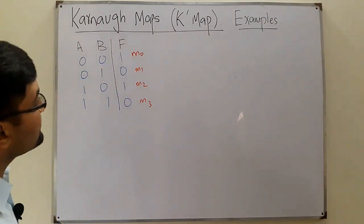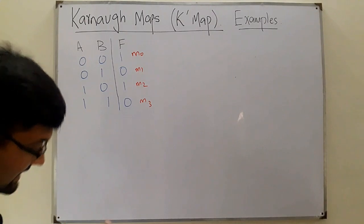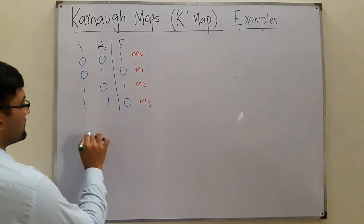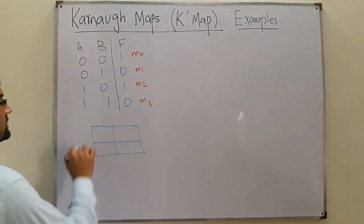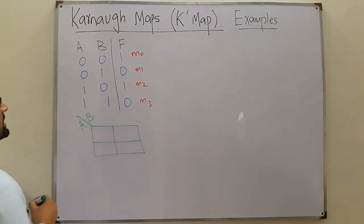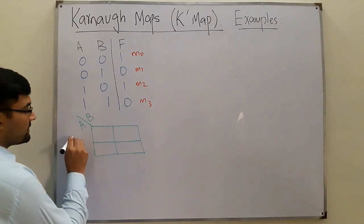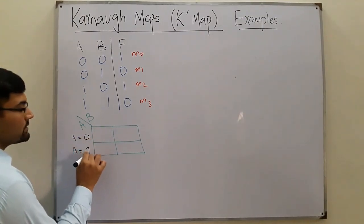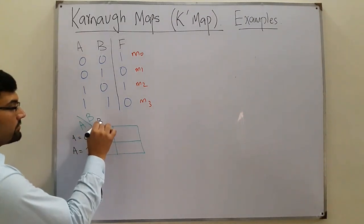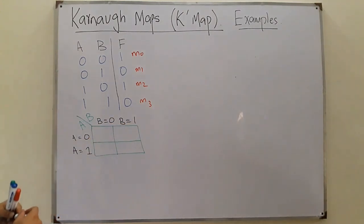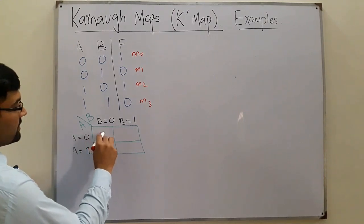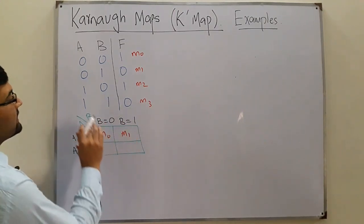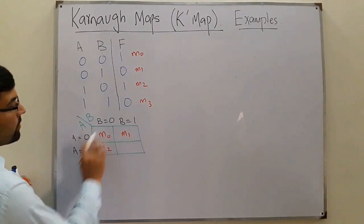Now, how do we arrange the cells when we have four? We write A on one side and B on the other, where A is the MSB and B is the LSB. A equals 0 for the first row and A equals 1 for the second row. B equals 0 for the first column and B equals 1 for the second column. This makes the first block 00, which is m0; then 01 is m1; then 10 is m2; and 11 is m3.